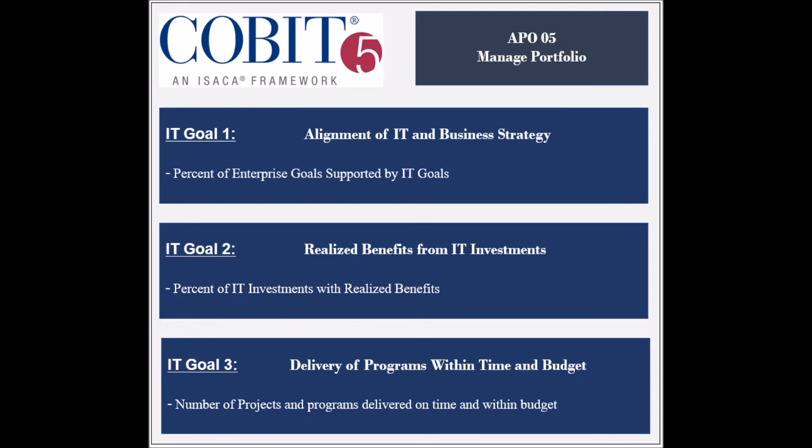The third supported goal is to ensure the delivery of programs within time and budget constraints. Its achievement is measured by the number of programs delivered on time, and by the stakeholder satisfaction level with the program quality.